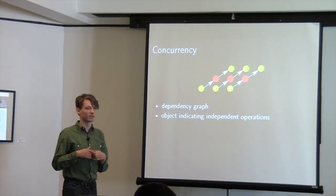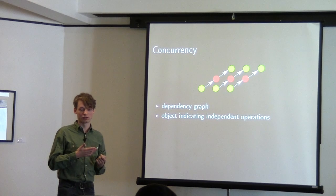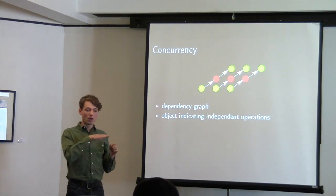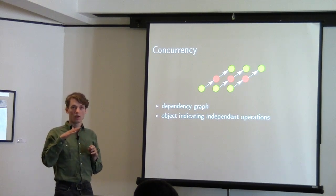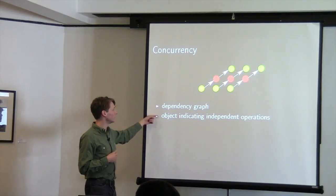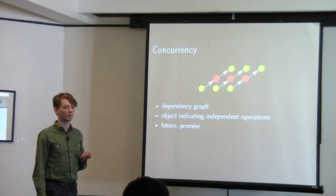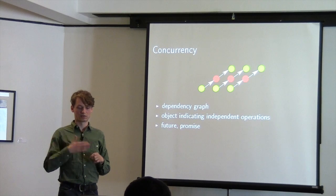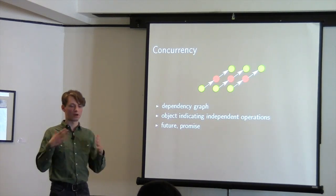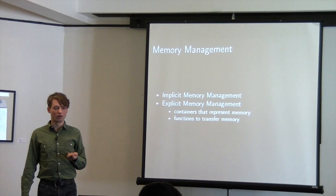We need a way to describe this concurrency dependency graph. This is usually done with a queue or stream — OpenCL calls it a command queue, CUDA calls it a stream. We enqueue commands and at some point say: before you start this command, wait for the command in the other queue to synchronize. These are objects indicating independent operations. People at this conference suggested this could be represented with futures and promises — I haven't fully understood this yet, but it might be possible to have a concurrency approach based on futures for accelerators.